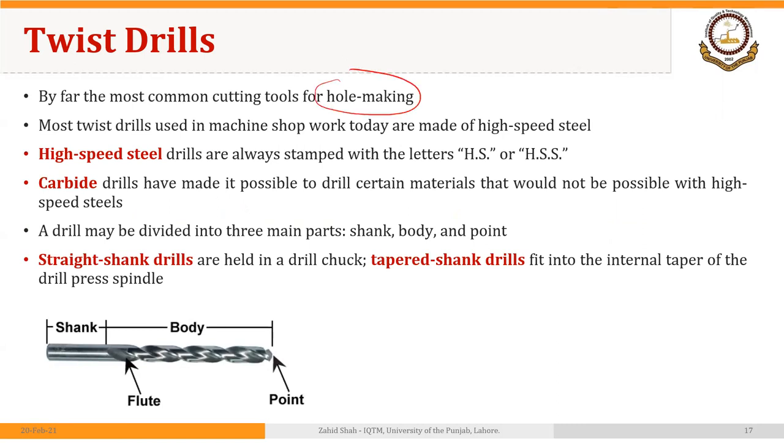Most twist drills used in machine shop work today are made of high speed steel. As we discussed during our lecture on cutting tool materials, HSS is a tough material. For long and thin cutting tools like twist drills, reamers, and taps, or thin cutting tools like milling saws, we use HSS. But if the workpiece material is too hard to be machined using HSS, then we move toward carbide material. Same is true for twist drills. We may move to carbide drills if the workpiece material is too hard to be drilled using HSS drills.